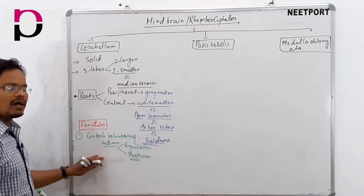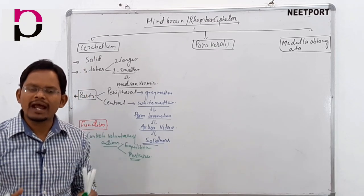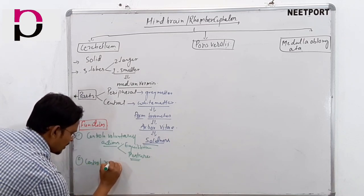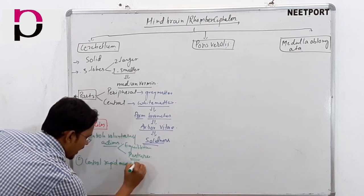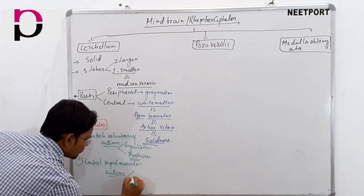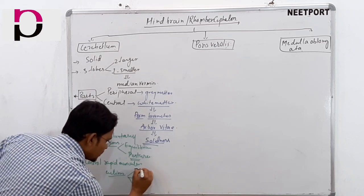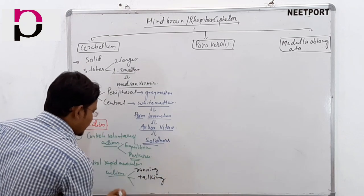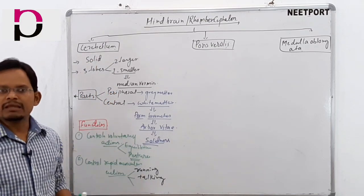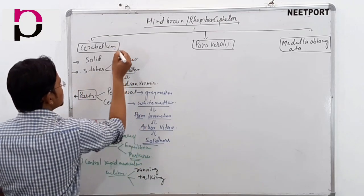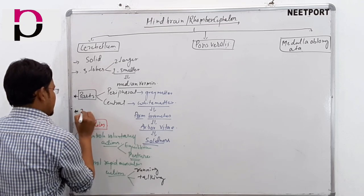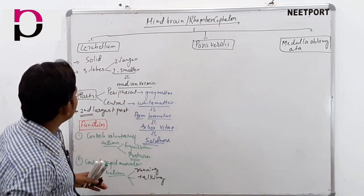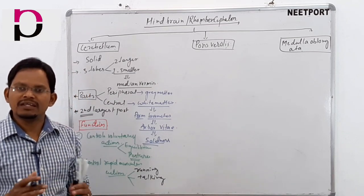Cerebellum also controls rapid muscular actions. For example, sudden running or talking - these kinds of rapid muscular actions are controlled by the cerebellum. Cerebellum is the second largest part of the brain and is very important in terms of controlling various functions.